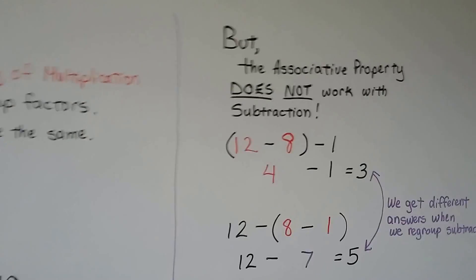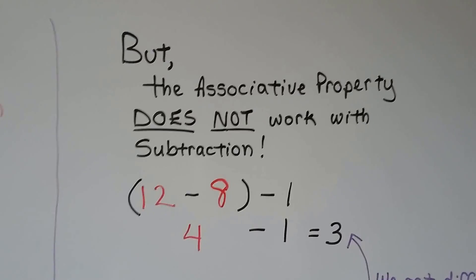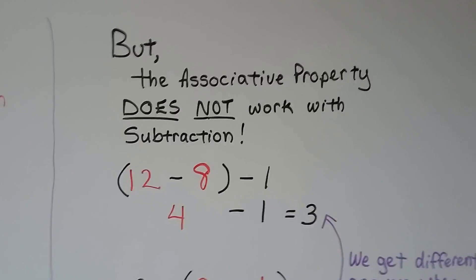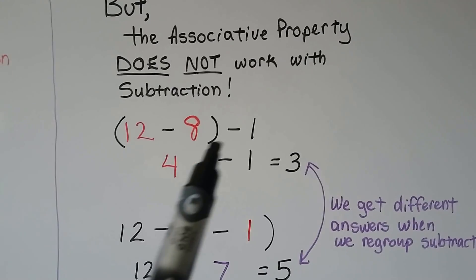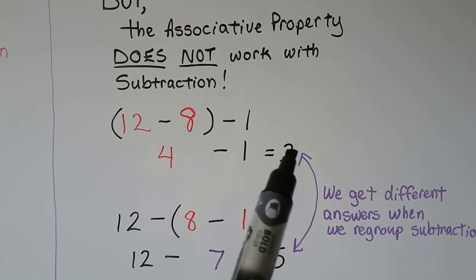But the associative property does not work with subtraction. If we have 12 minus 8 in parentheses, well that's 4. Then we subtract the 1, we get a 3.